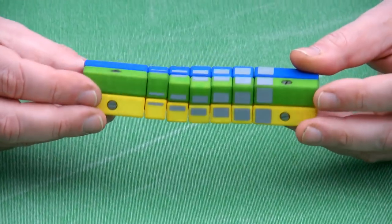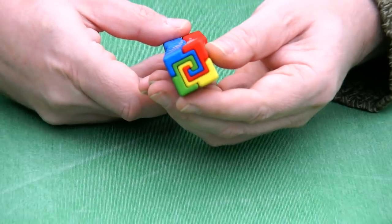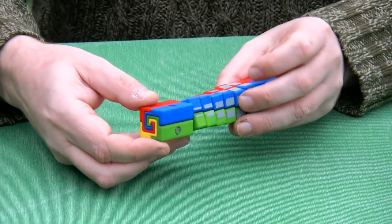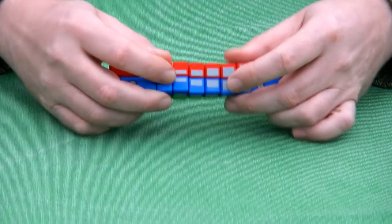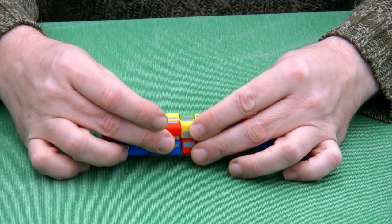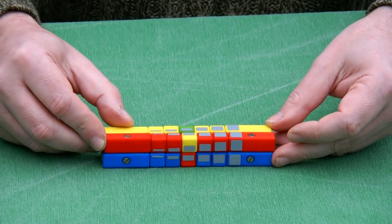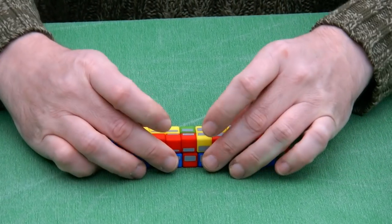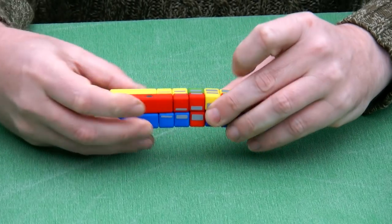Here you see what it looks like from all sides. It's a twisty puzzle because you can twist the parts, but you can also slide them like this and then you have more twists.